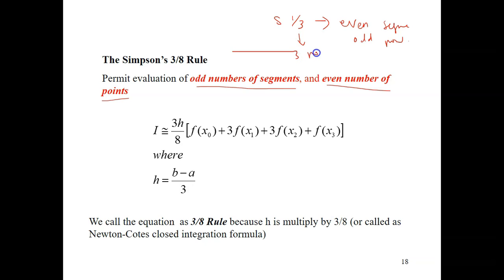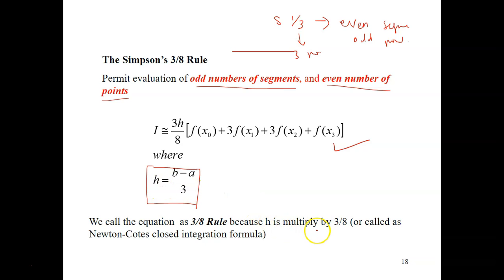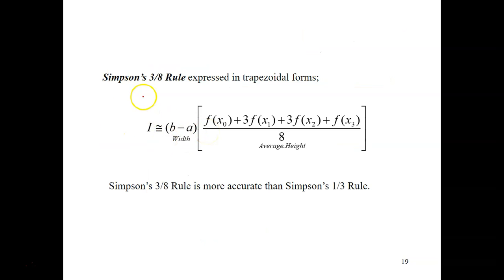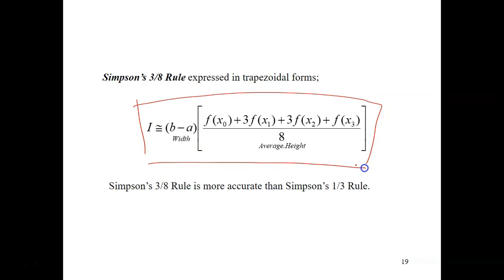Simpson's one-third requires 3 points and 2 segments. For Simpson's 3/8 rule, it's the other way around — it needs an odd number of segments and an even number of points. This is the formula for the 3/8 rule. The step size is B minus A divided by 3. The equation is called the 3/8 rule because H, the step size, is multiplied by 3/8, also called the Newton-Cotes closed integration formula.